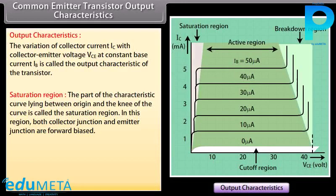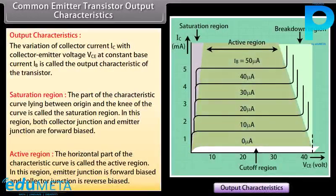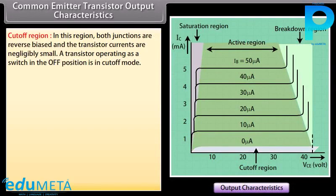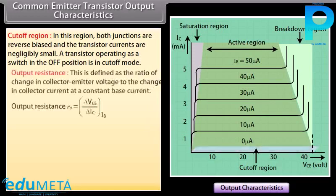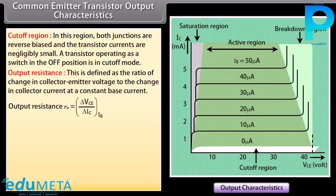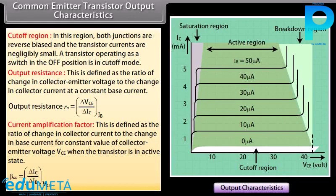In the saturation region, both collector junction and emitter junction are forward biased. The horizontal part of the characteristic curve is called the active region, where the emitter junction is forward biased and collector junction is reverse biased. In the cut-off region, both junctions are reverse biased and transistor currents are negligibly small — a transistor operating as a switch in the OFF position is in cut-off mode. Output resistance is the ratio of change in VCE to change in IC at constant IB. Current amplification factor (beta) is the ratio of change in collector current to change in base current at constant VCE in the active state.